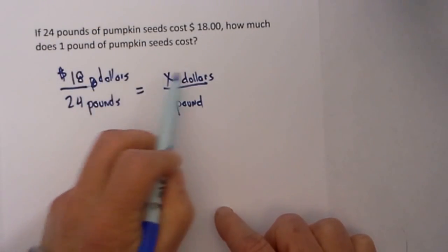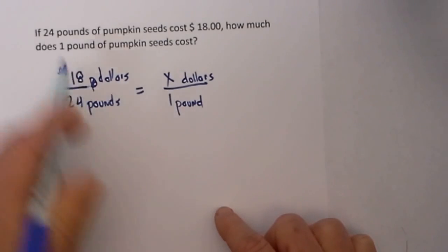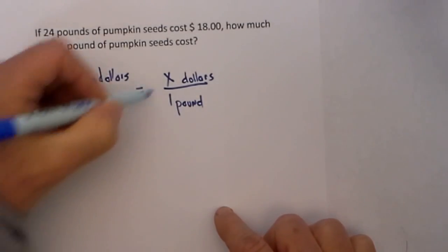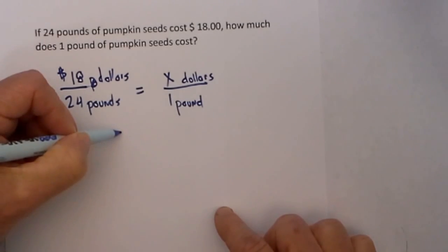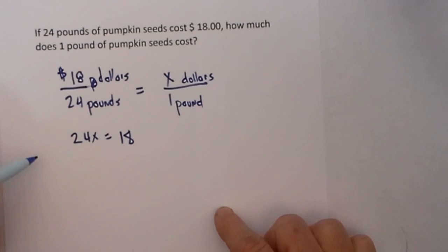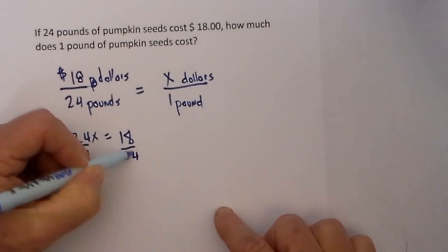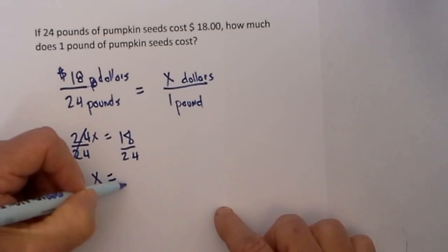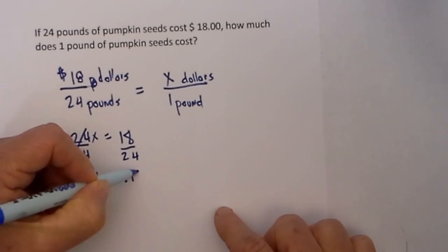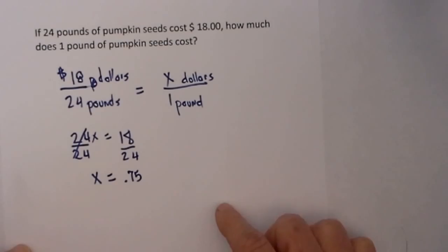So that will be our x and then I will write dollars. If you notice we have dollars and dollars, pounds and pounds. The next step is to cross multiply. If I go this direction we have 24x is equal to 18. Then I want to isolate the x, so I will divide each side by 24.